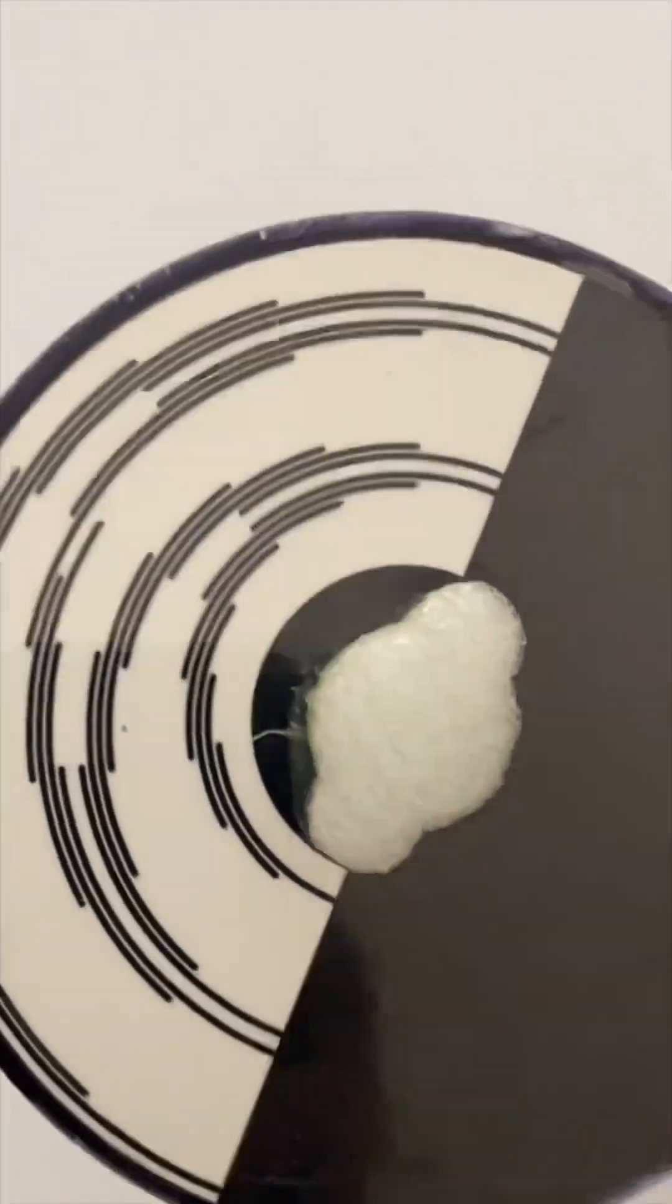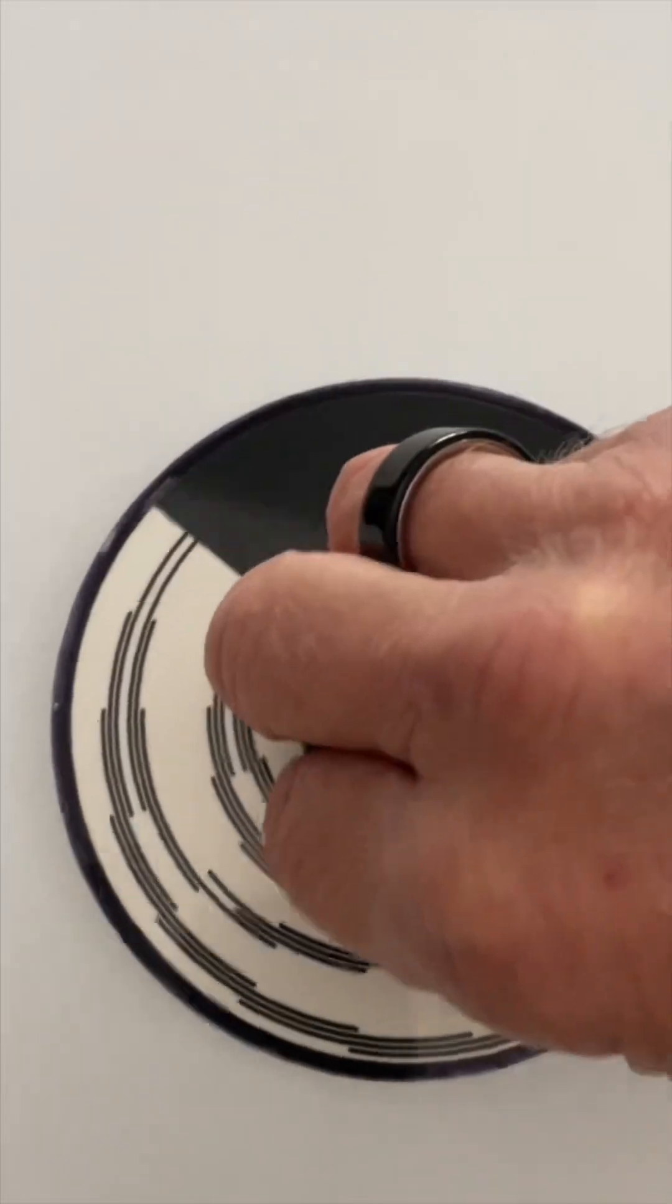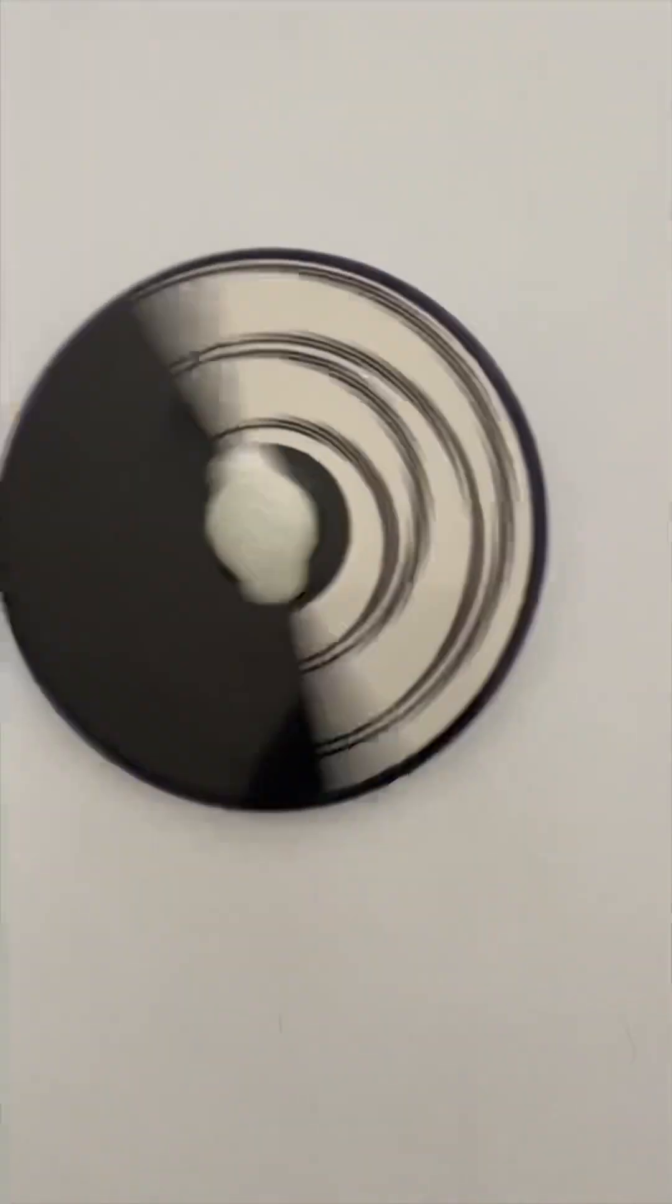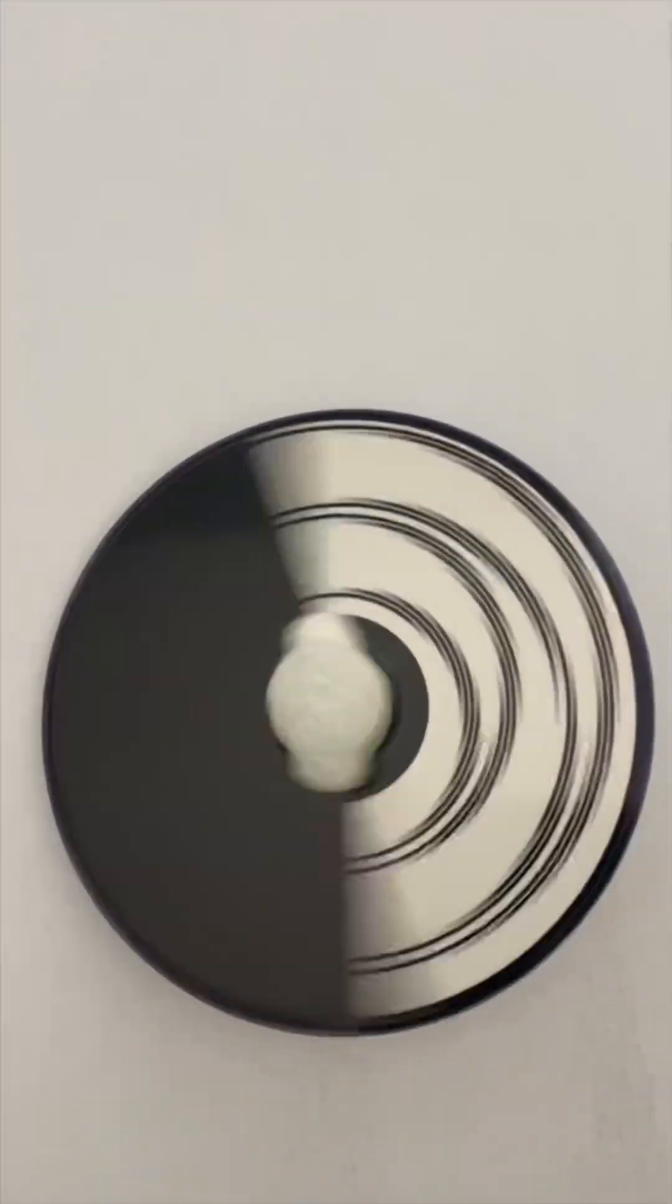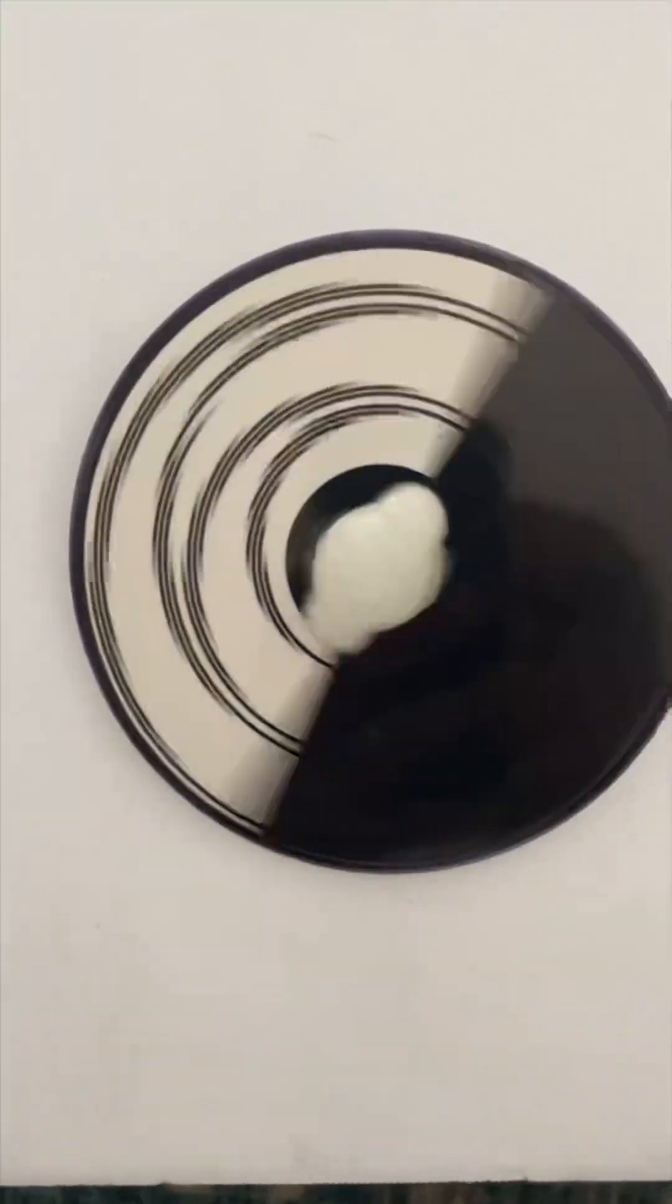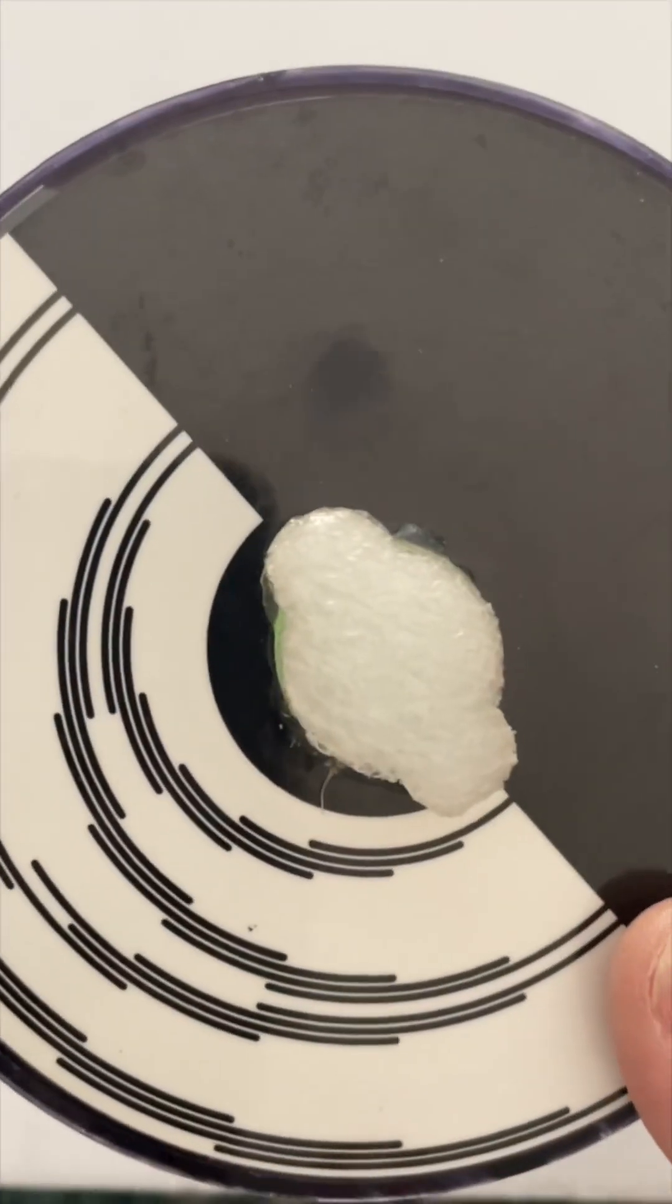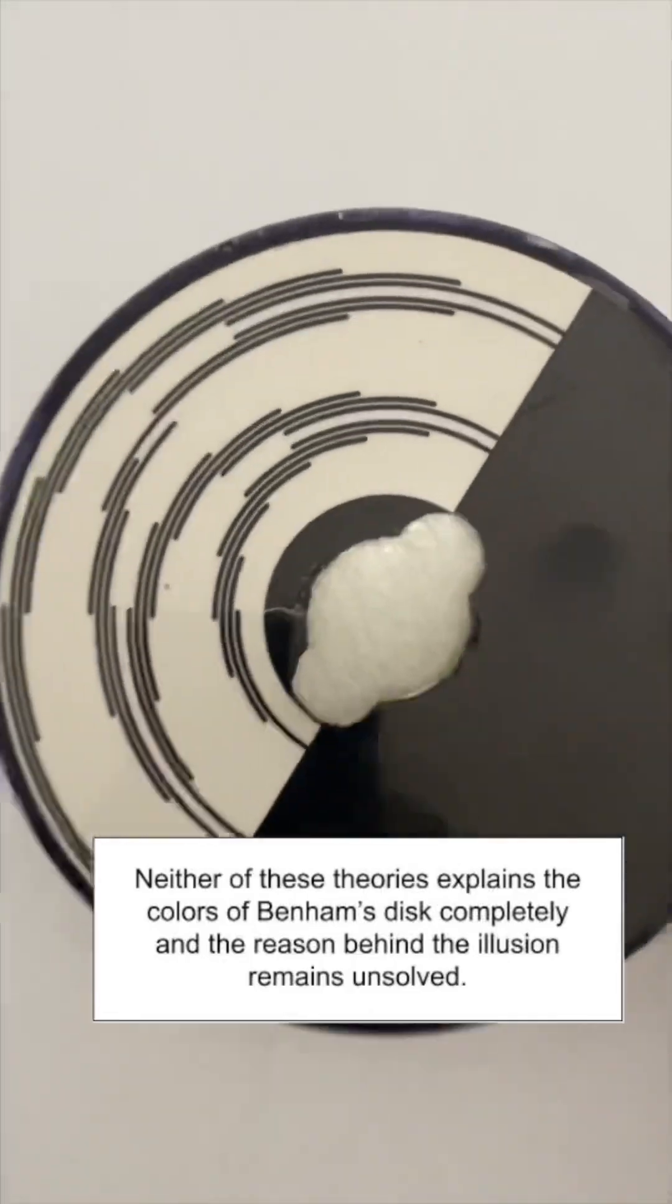Another theory is that the types of cones take different times to respond, that they stay activated for a different amount of time. Therefore, when you spin the disc, the white color activates all three types of cones, but then the black deactivates them. So the activation-deactivation sequence causes an imbalance between the different types of cones taking different times to respond.